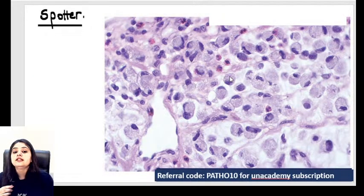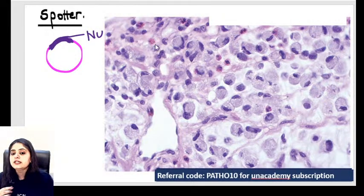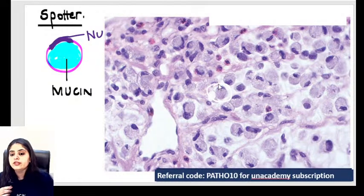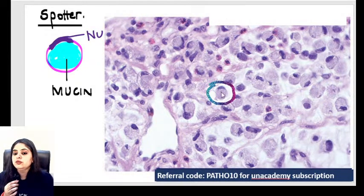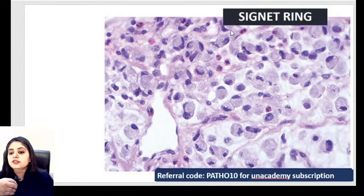Next spotter — signet ring cells. A signet ring cell has the nucleus at the periphery forming a ring, and the interior is filled with mucin. You can see sheets of signet ring cells with peripheral nucleus and mucin filling the rest of the cell.